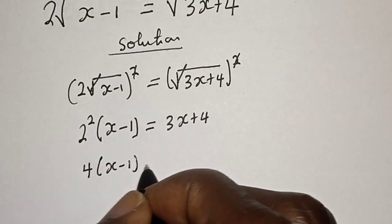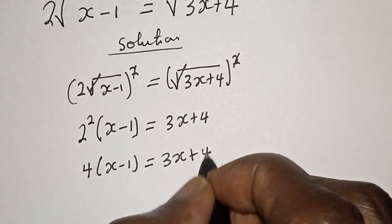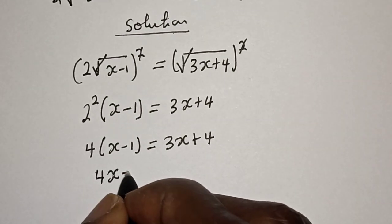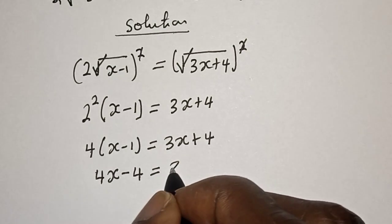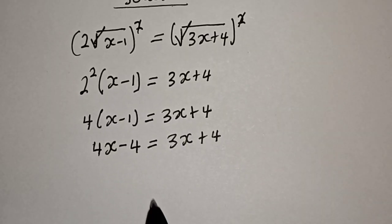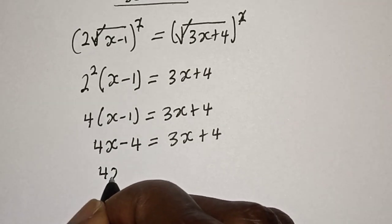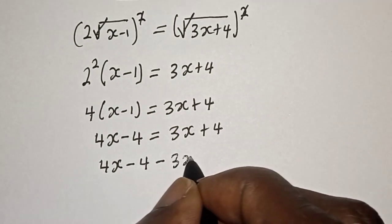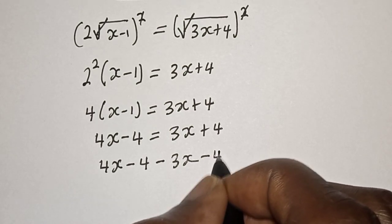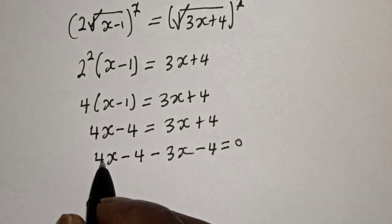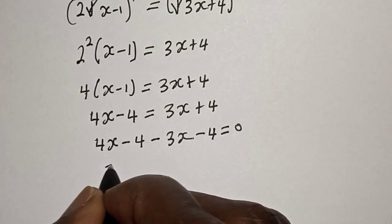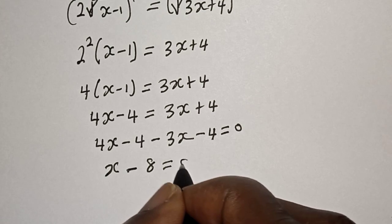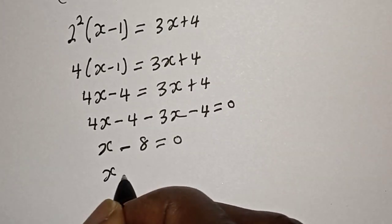This is equal to 3s plus 4. Let's open the bracket: 4 times s minus 4 times 1, so 4s minus 4, is equal to 3s plus 4. Rearranging, 4s minus 3s minus 4 minus 4 equals 0, giving s is equal to 8.